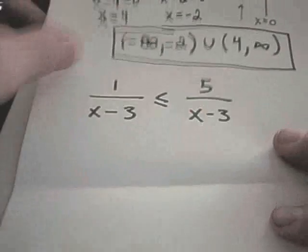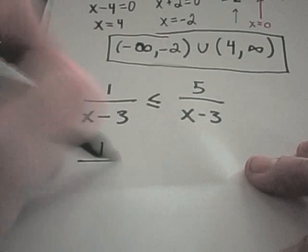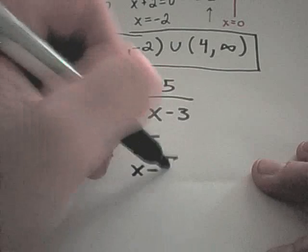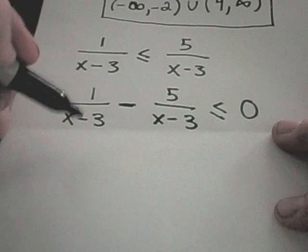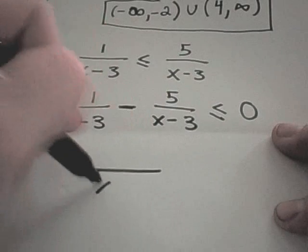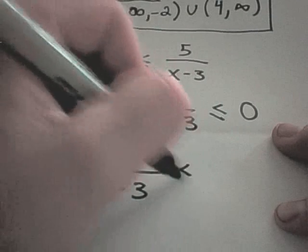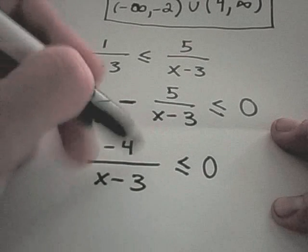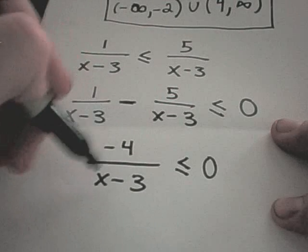The next problem has the same idea, except zero is not already on one side. I need to move the 5/(x − 3) term by subtracting it from both sides, which moves it to the left side. Since we now have common denominators, we can write it as a single fraction. Doing the arithmetic on the top: 1 − 5 = −4, giving us −4/(x − 3). There are no x's in the numerator, so nothing will make the top equal to zero.